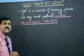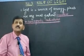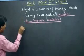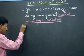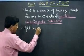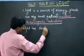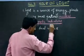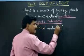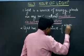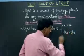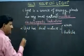Electromagnetic means light has properties of electric and magnetic. Point number two: light has dual nature, meaning it behaves as both a wave and a particle.